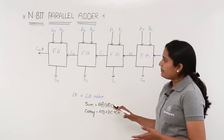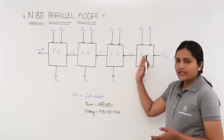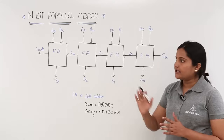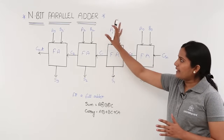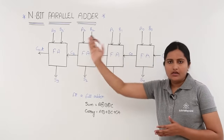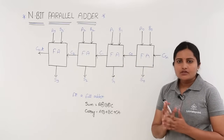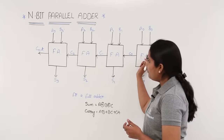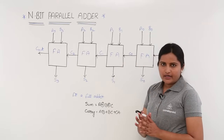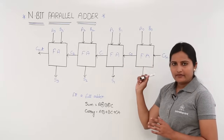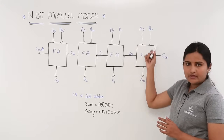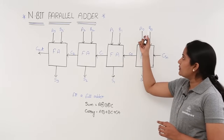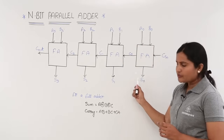For example, I have taken a 4-bit full adder. That means we require 4 full adders. How many bits there are, that many full adders we need to cascade. For an n-bit parallel adder, you need to cascade all n full adders in the same way. Here in the 4-bit full adder, each full adder requires a carry input, 2 data inputs, a sum output, and a carry output.